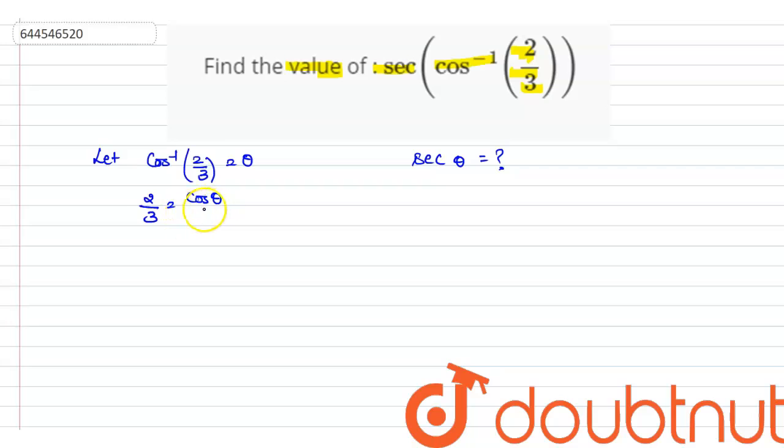As we have this cos of theta value, so from here as we know that this sec of theta, this is nothing but the inverse of cos of theta. So from here we can say that this value will be this sec of theta, this will be 1 by cos of theta. And as we know that this cos theta is 2 by 3, so from here we can say that this is 1 divided by 2 by 3. So this value will become this sec of theta will become 3 by 2.